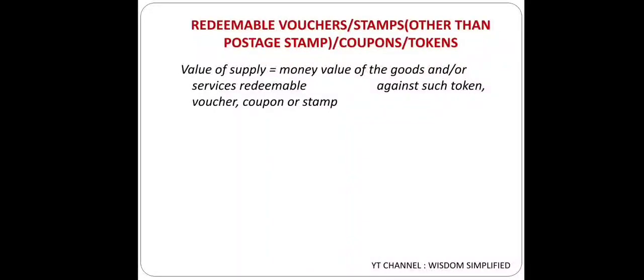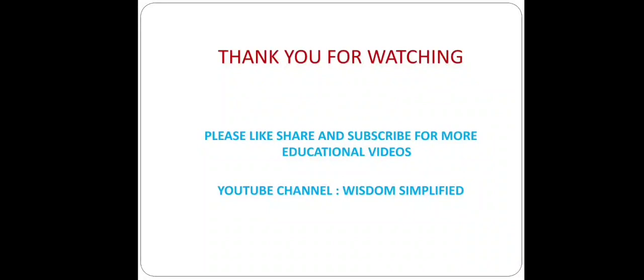Fifth case: Redeemable vouchers, stamps (other than postage stamps), coupons and tokens. In this case, Value of Supply = money value of goods and/or services redeemable against such token, voucher, or coupon. For example, if you receive a shopping voucher and buy goods with it, the money value of those goods is the Value of Supply. This completes all five specific cases under Rule 32. Rules 33, 34, and 35 will be covered in the next video. Thank you for watching - please like, share and subscribe to Wisdom Simplified.